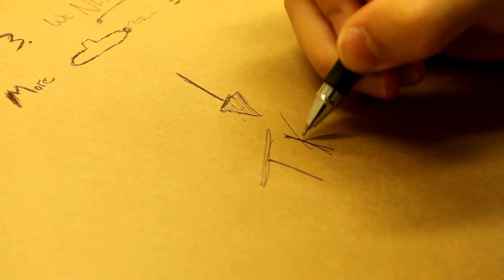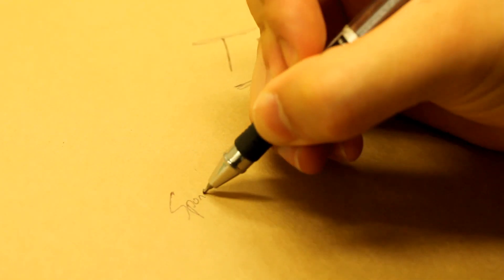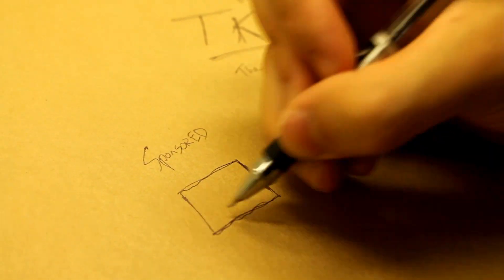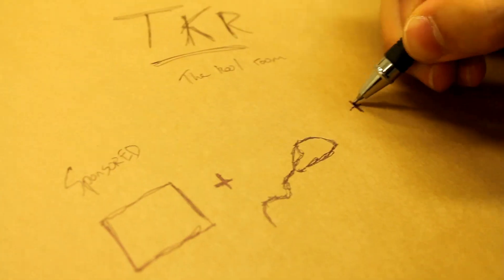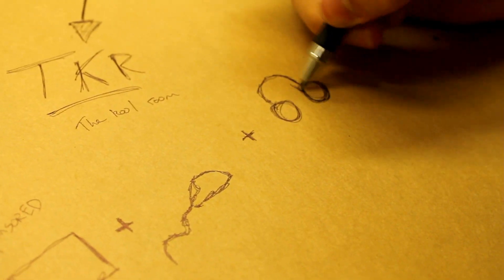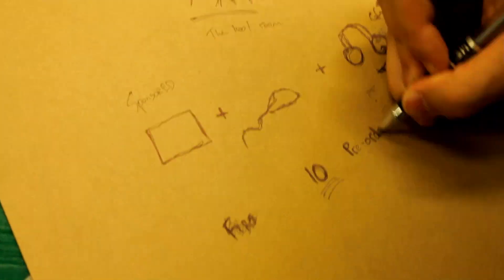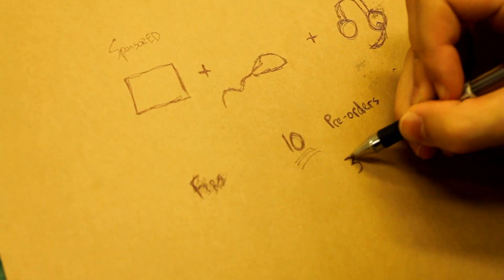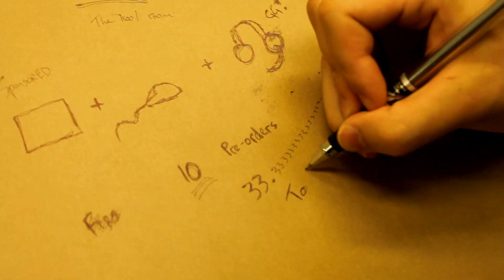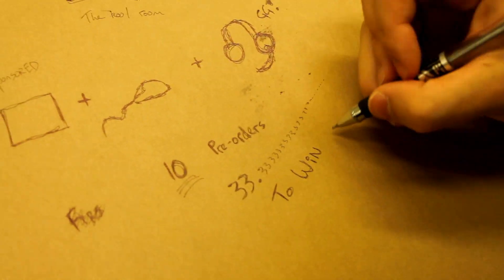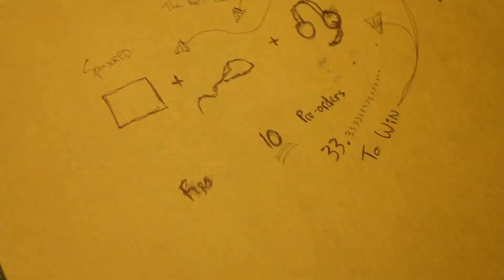And so we move to the first news of the day, which is TKR. The Cool Room has sponsored us three gaming items from Ozone Gaming. You've got the mouse pad, the mouse and the headset, a really good headset. And if you are one of the first 10 to pre-order the newly priced Micron case, you have a 33.33% chance to win one of these gaming items. So pre-order now.